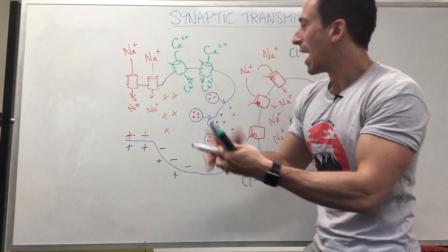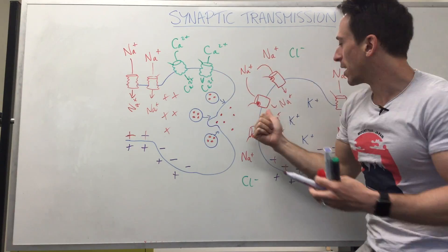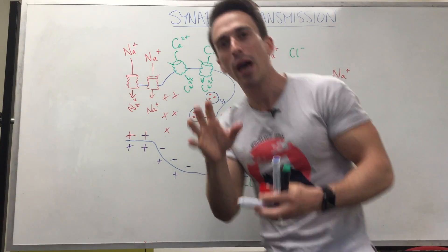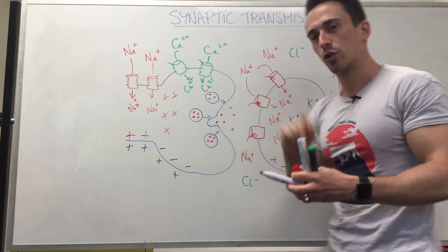So what you get is an electrical signal, then a chemical signal, then an electrical signal again. And that's if you have a stimulatory neurotransmitter.